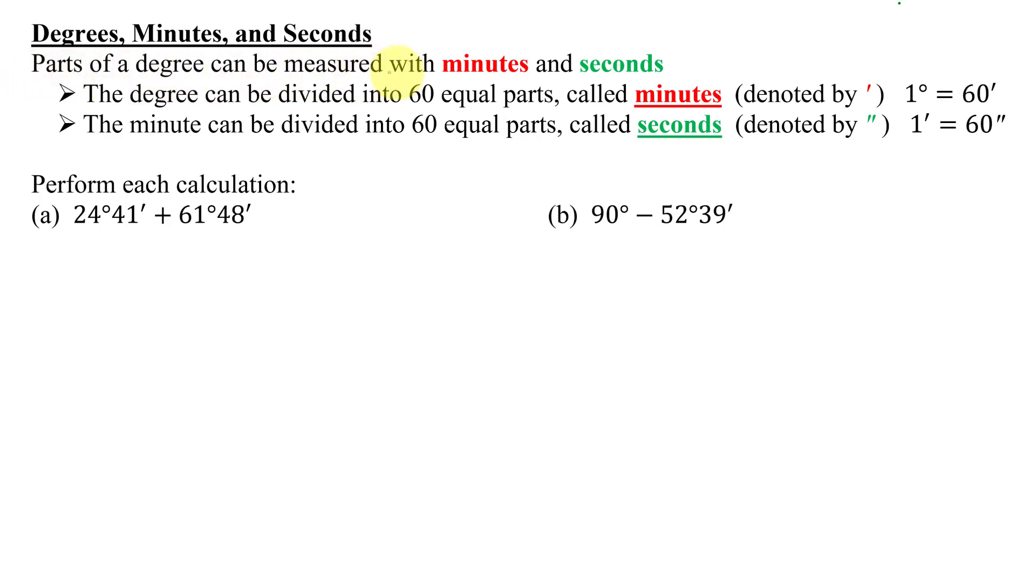Parts of a degree can be measured with minutes and seconds. A degree can be divided into 60 equal parts called minutes, denoted with the prime symbol, and one degree equals 60 minutes. A minute can be divided into 60 equal parts called seconds, denoted by double prime, and one minute equals 60 seconds.